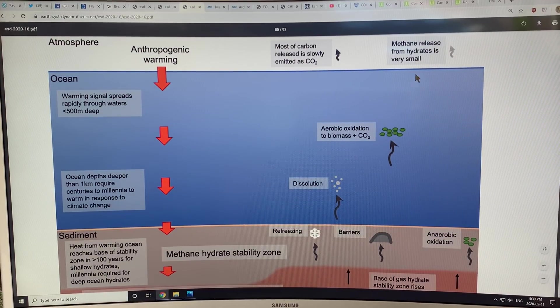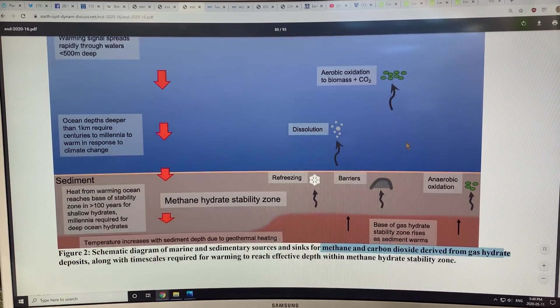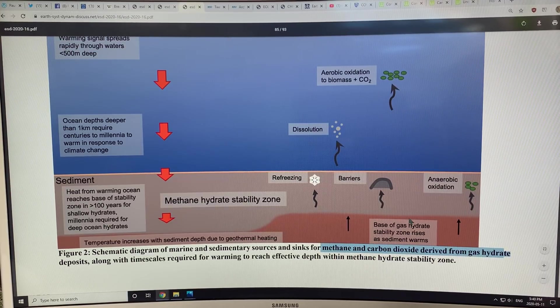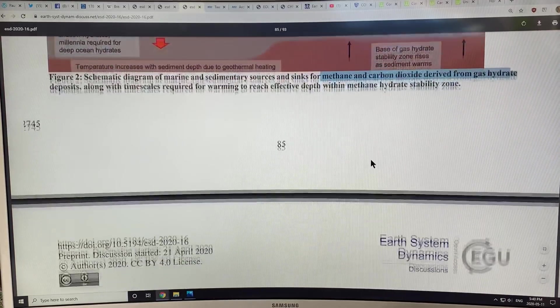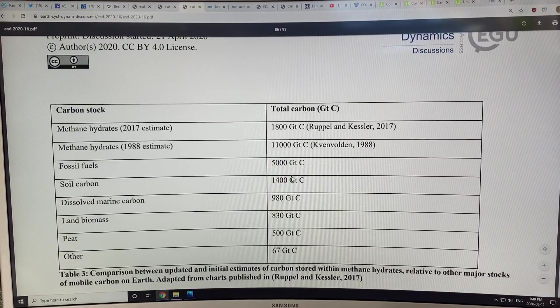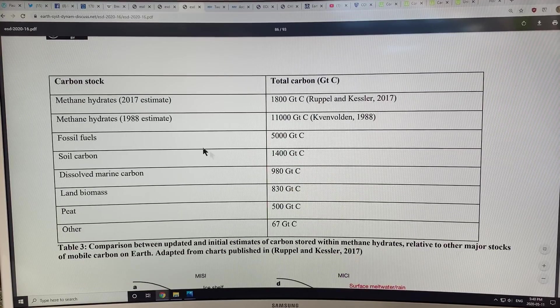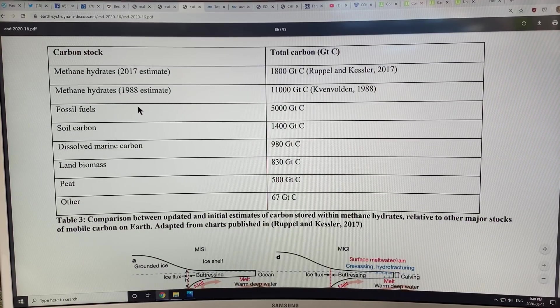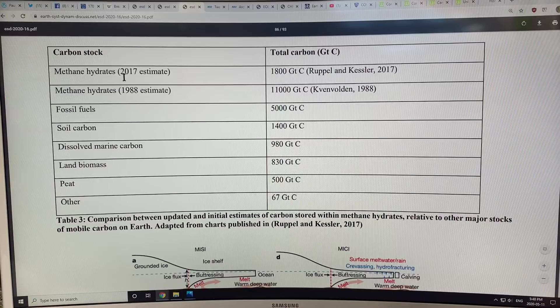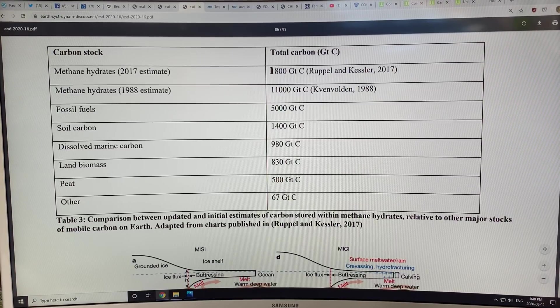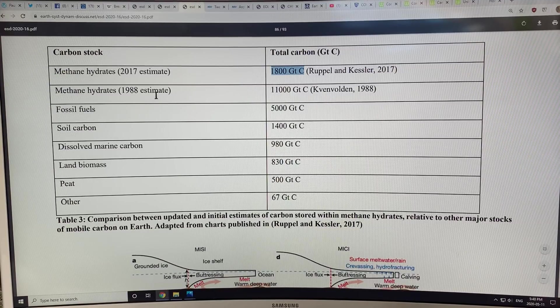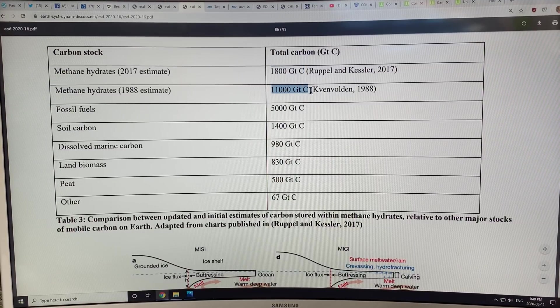They say here the release from hydrates is generally very small at the moment. This shows you basically how the hydrates are coming out of the sediments at the base of the ocean floor. In terms of the carbon stock, how much carbon is in the hydrates? A 2017 estimate is 1,800 gigatons of carbon. A previous estimate in 1988 was 11,000 gigatons of carbon.